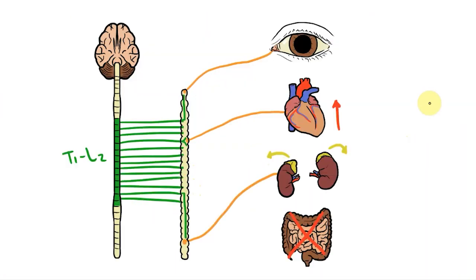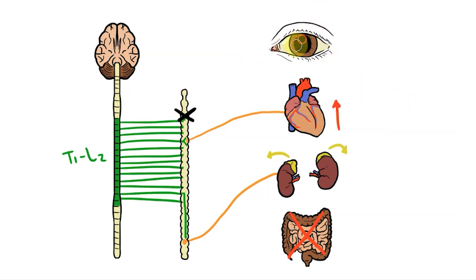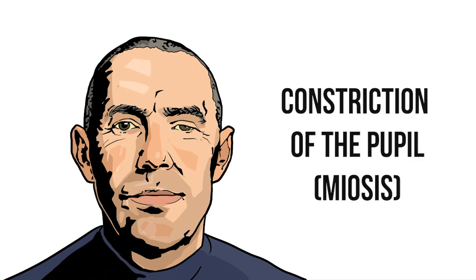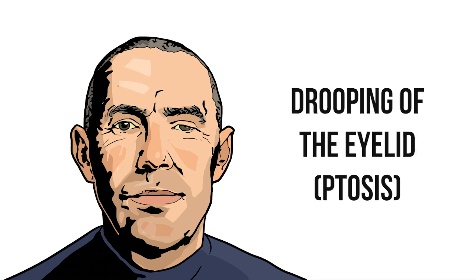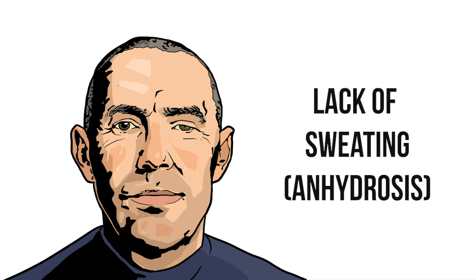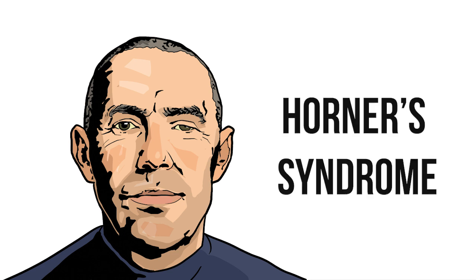Let's finish with a clinical scenario. Imagine a patient with compression of their sympathetic chain just here, above the level of T1. What symptoms would they have? Well, compression here would stop any preganglionic fibres from reaching the upper ganglia in the chain. This means that postganglionic fibres at these levels won't receive any innervation. Without this, we'll see loss of all sympathetic innervation to one side of the head. This would present as constriction of one pupil, drooping of the same eyelid, and a lack of sweating on the injured side. This condition is known as Horner's syndrome.